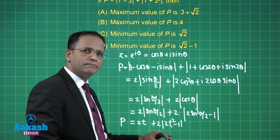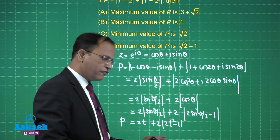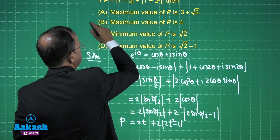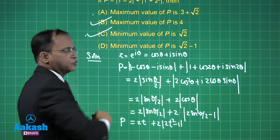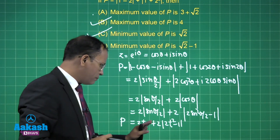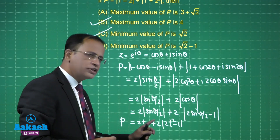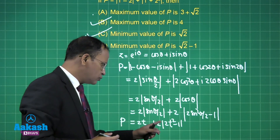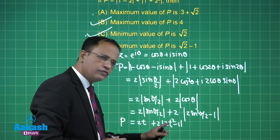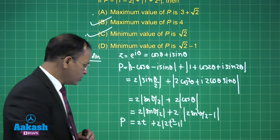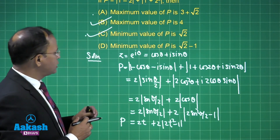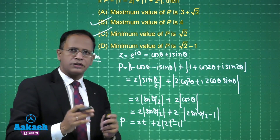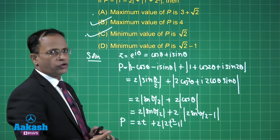If p is a function of t, drawing the graph shows us the maximum value of p is 4 and the minimum value is √2. We separate into cases: if 2t² − 1 ≥ 0, then |2t² − 1| = 2t² − 1; if 2t² − 1 < 0, then |2t² − 1| = −(2t² − 1). This gives two cases of p, and plotting the parabola gives options B and C as the correct answers.